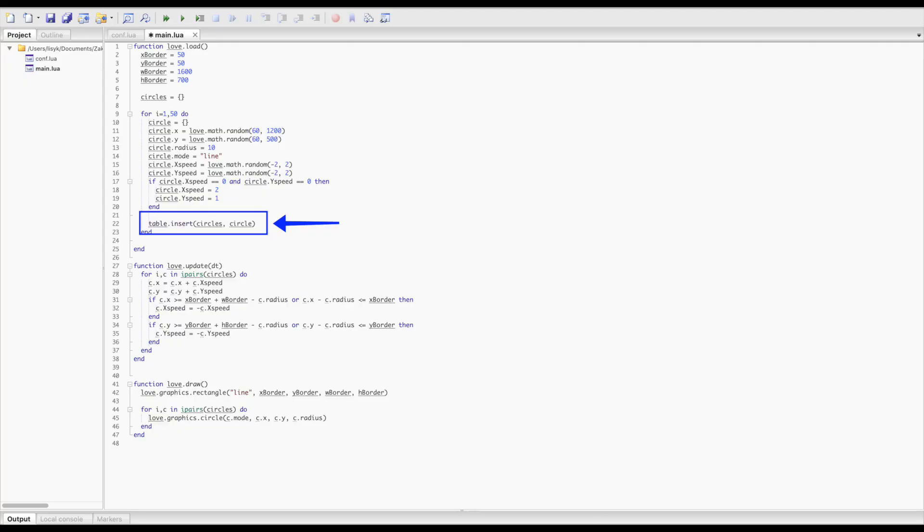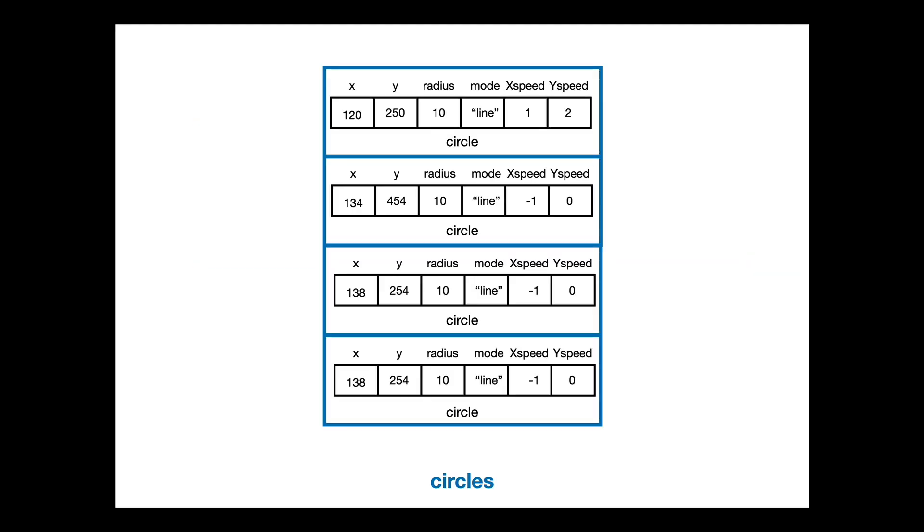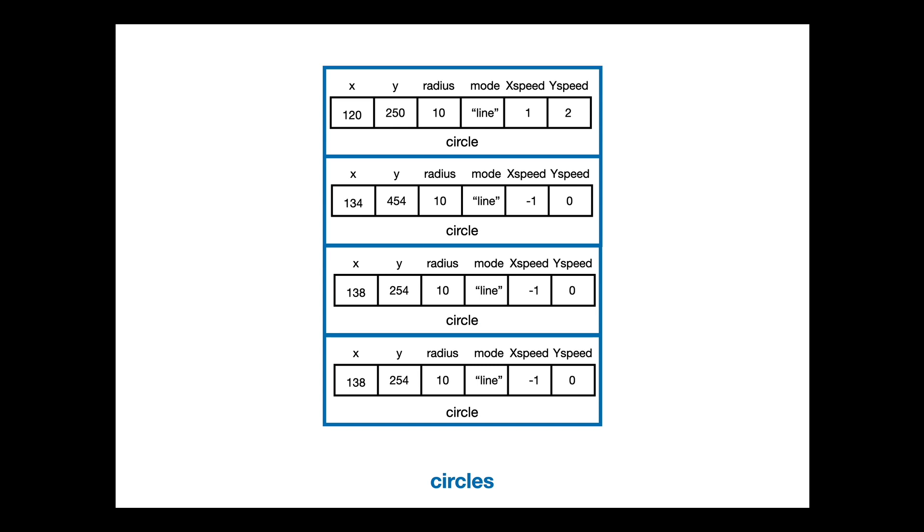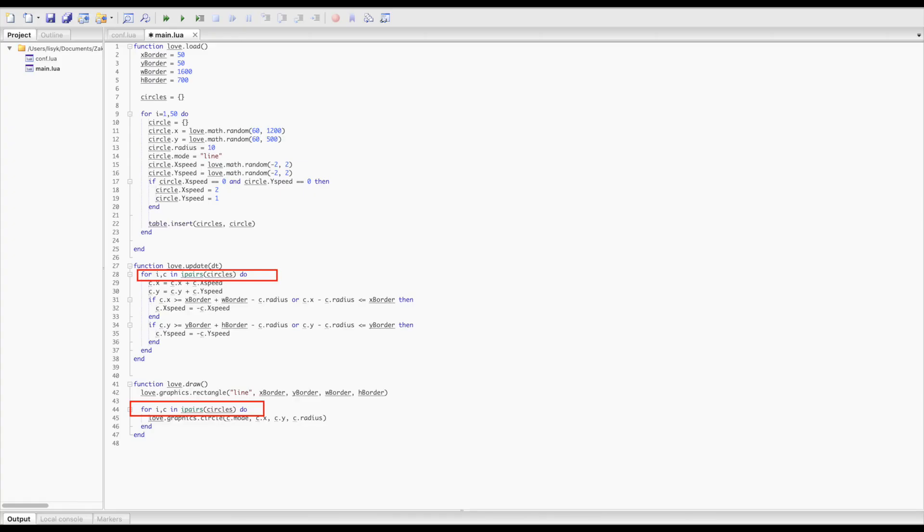And this is the table we got eventually for every circle. Now with the command table.insert circles circle, we're adding the circle to another table, circles. So eventually, our circles table will have many circle objects.